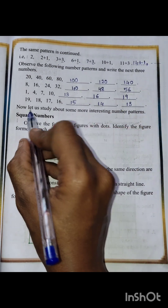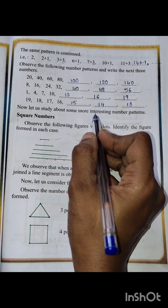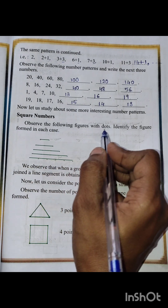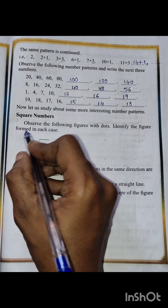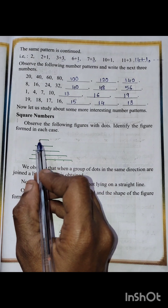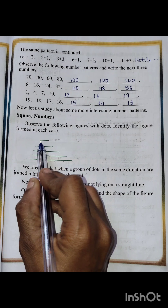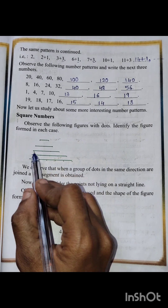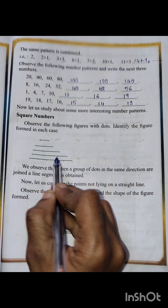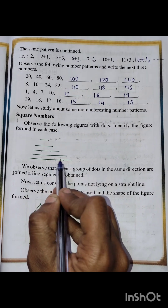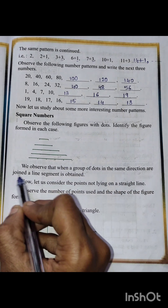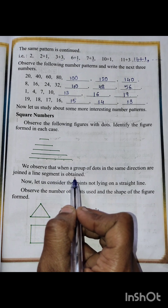Now let us study some more interesting number patterns: square numbers. Observe the following figures with dots and identify the figure formed in each case. These are straight lines. When 2 dots are given, then 3, then 4, then 5, then 6 — a group of dots in the same direction joined forms a line segment.